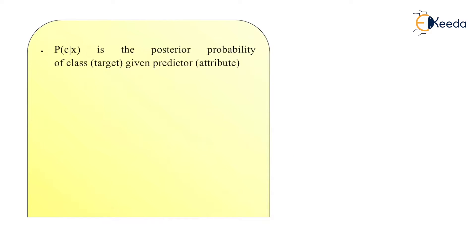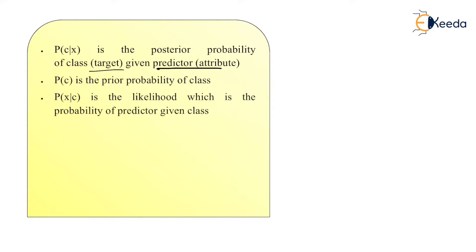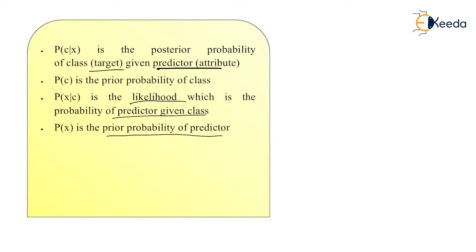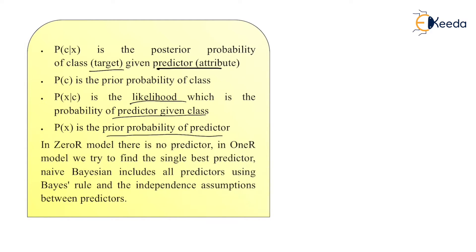P(C|X) is the posterior probability of a class target given the predictor. P(C) is the prior probability of a class. P(X|C) is the likelihood — the probability of the predictor given a class — and P(X) is the prior probability of the predictor. In a zero-hour model there is no predictor present, but in a one-hour model we try to find the single best predictor. Naive Bayes includes all the predictors using Bayes rule and the independence assumption between the predictors.